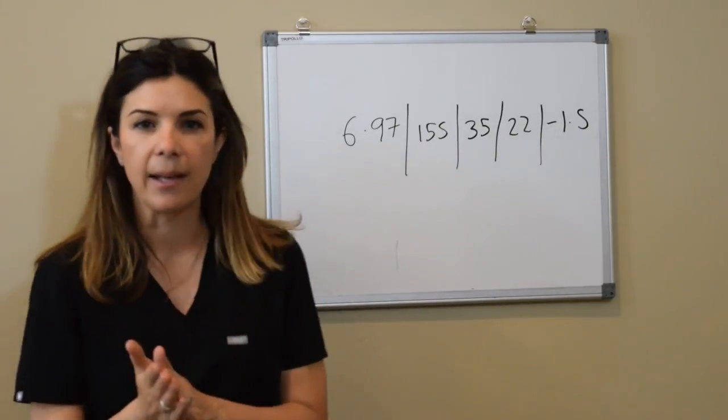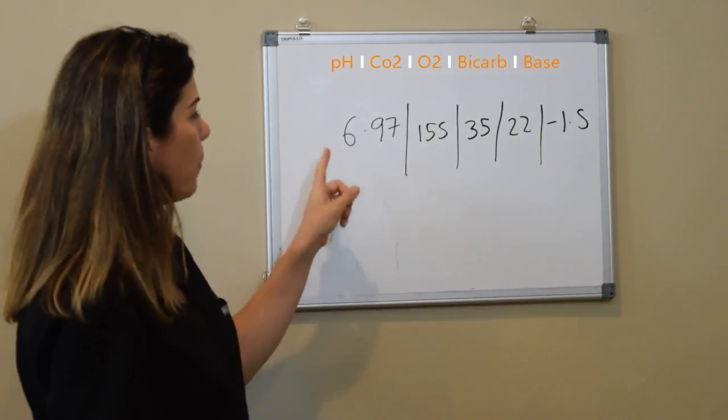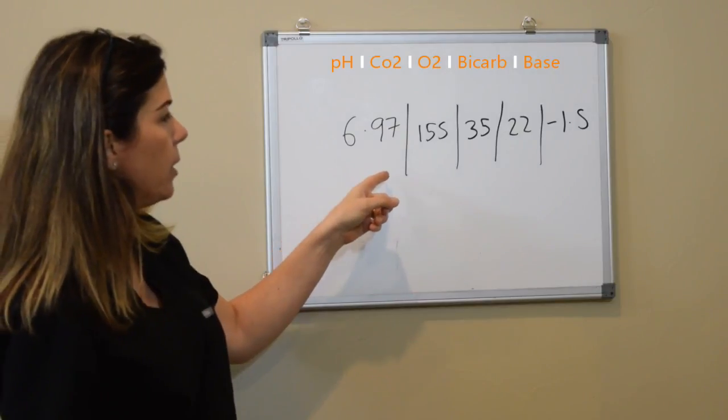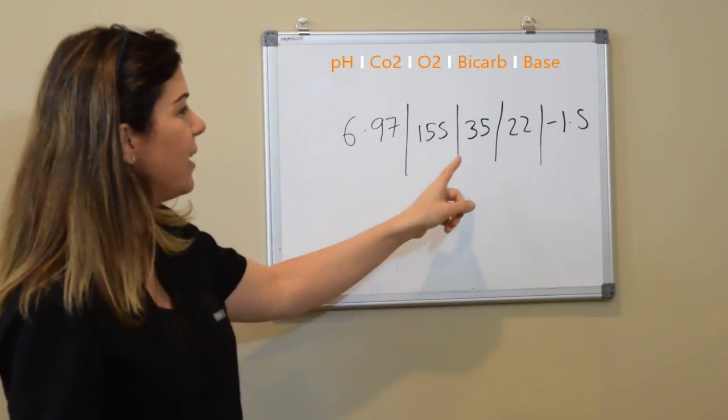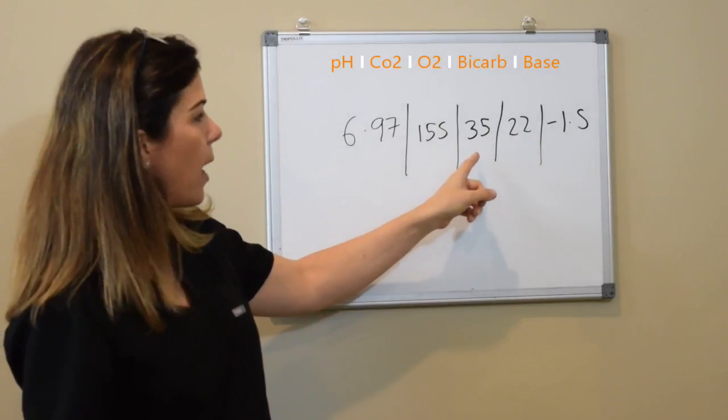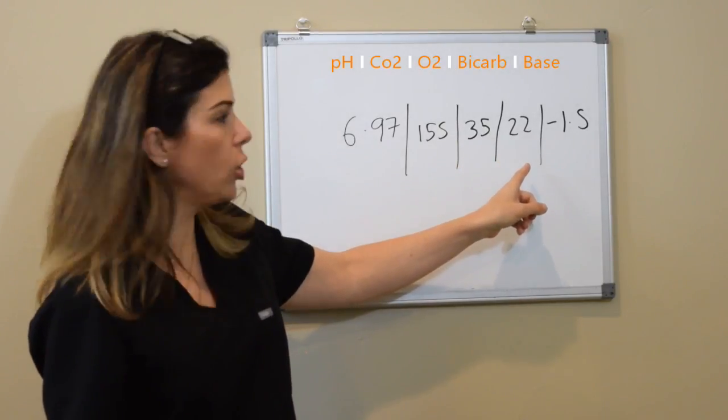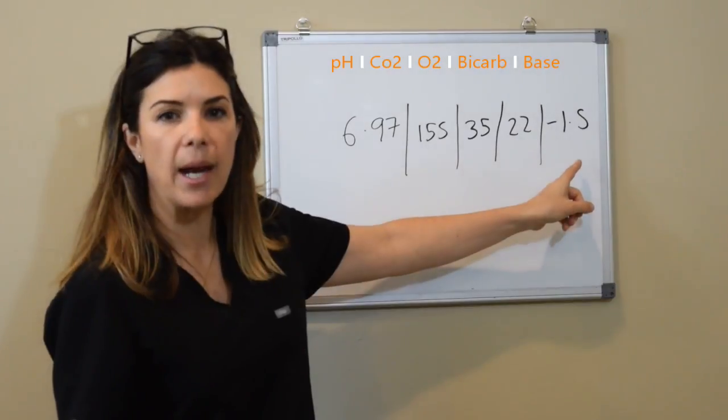So look at this gas, it doesn't look very pretty. We have a pH of 6.97, a CO2 of 155, crazy elevated, an oxygen of 35, bicarb is 22, and the base is minus 1.5.